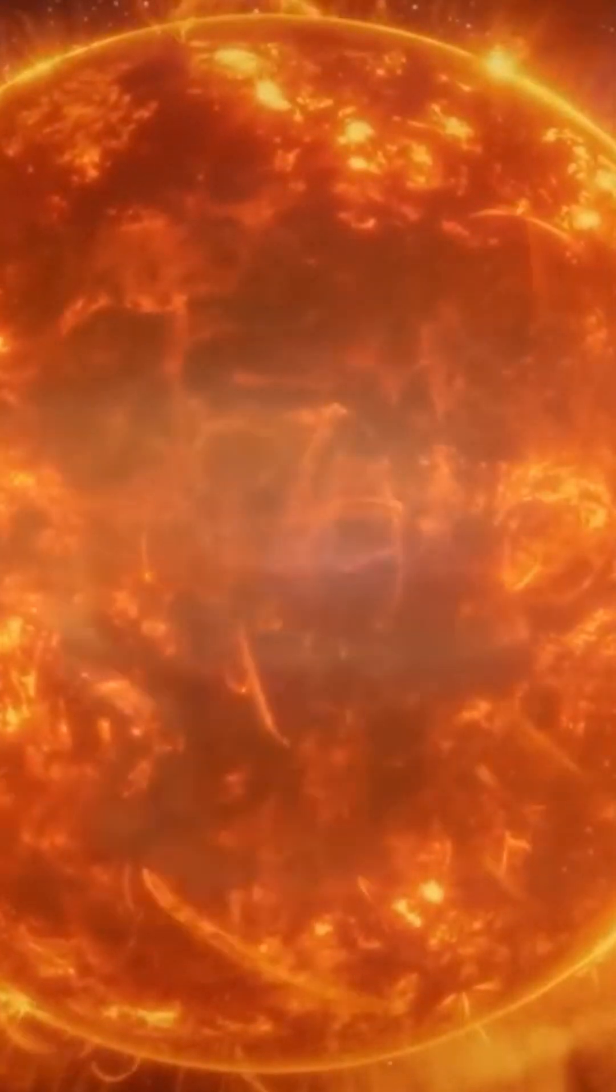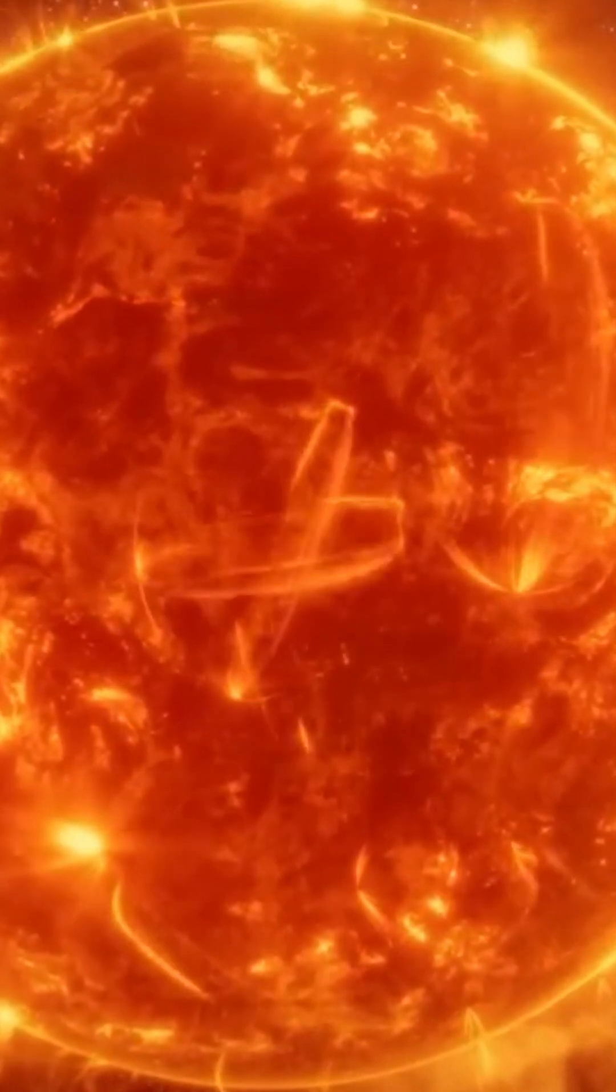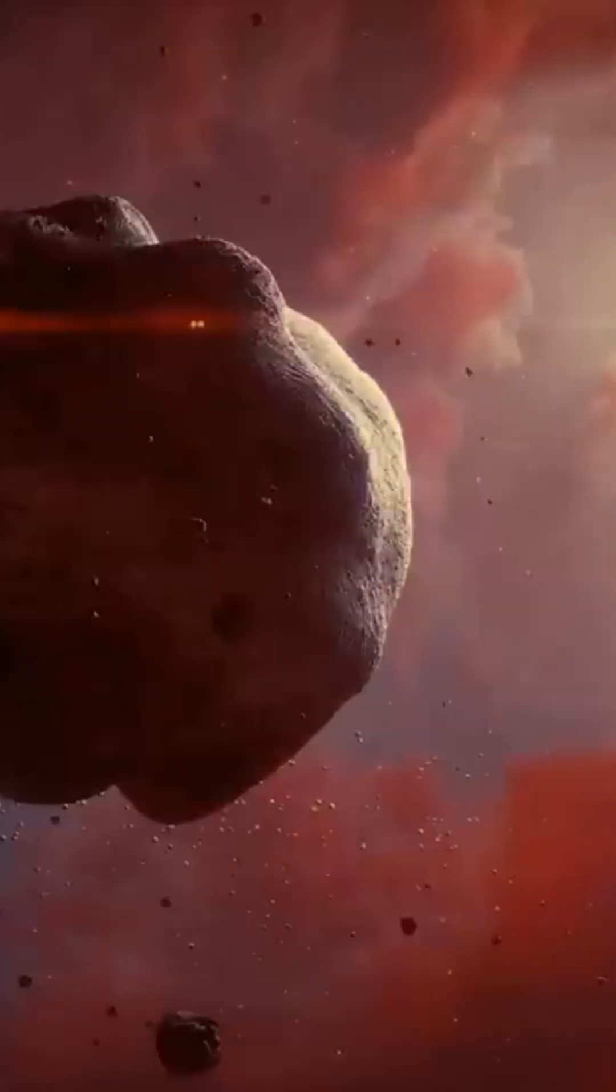The gases, lumps and grains that make up this disk concentrate to form the Sun, our star. The remaining matter coalesces to form planets and smaller objects.